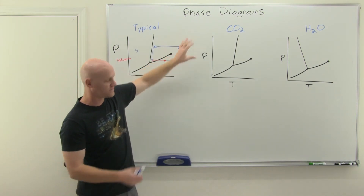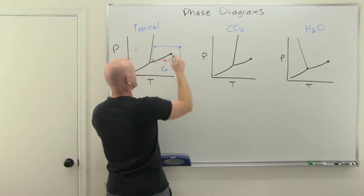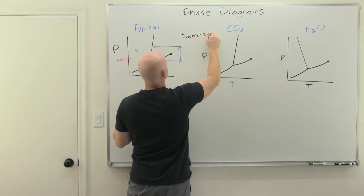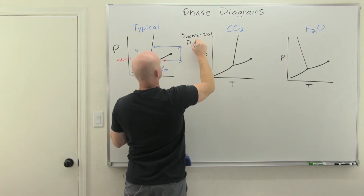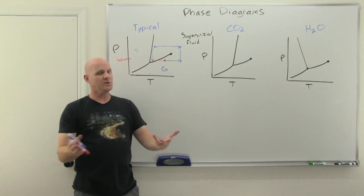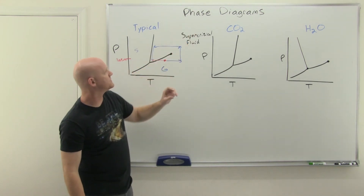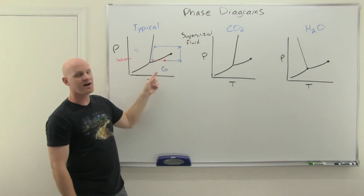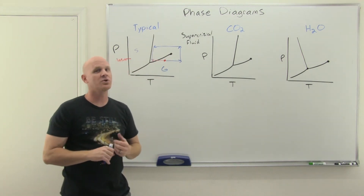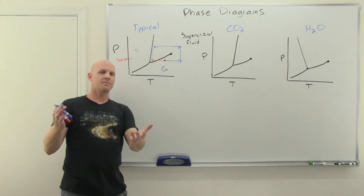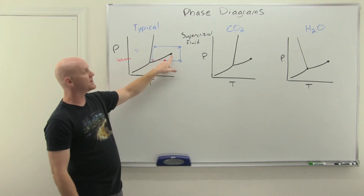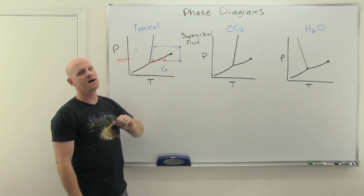If you're beyond the critical point in that region, you're not a liquid or a gas — you're what we call a supercritical fluid. Supercritical just means above the critical point. The critical point is the point above which there's no liquid-gas phase transition, and you should be able to identify it — it's at the very end of the liquid-gas line of equilibrium.